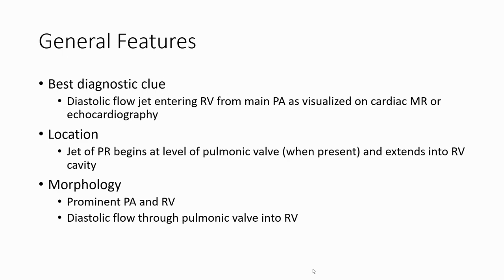Differential diagnosis of pulmonary regurgitation includes post-surgical states, congenital anomalies, and pulmonary hypertension. The best clue for diagnosis: you will find retrograde flow entering the right ventricle from the main pulmonary artery, affecting the main and branch pulmonary arteries.